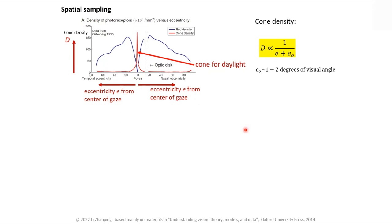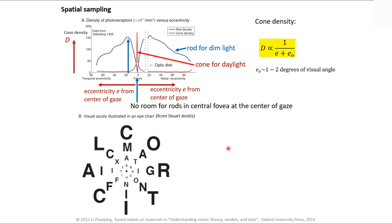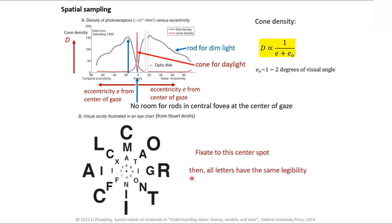The rods for night vision are actually absent at the very center — your center vision is almost blind for night vision. If you want to see at night you have to tilt your gaze a little bit. Your rod density is peaked near 15 degrees, so if you want to look at a dim star, don't look straight at it — there are no photoreceptors there. Tilting your gaze illustrates visual acuity: if you fixate near the center, everything looks equally legible, showing how poor peripheral vision is. This reflects not just sampling from your camera, but also a lot about the brain's central processing.